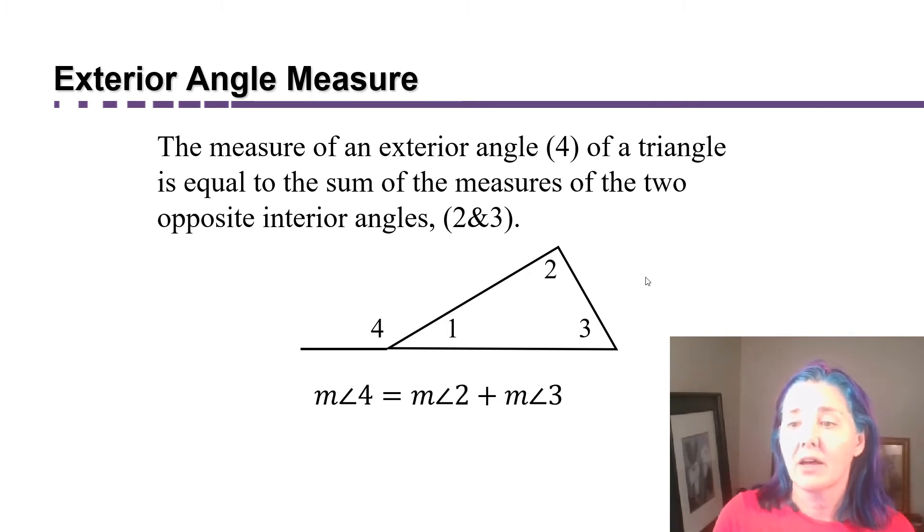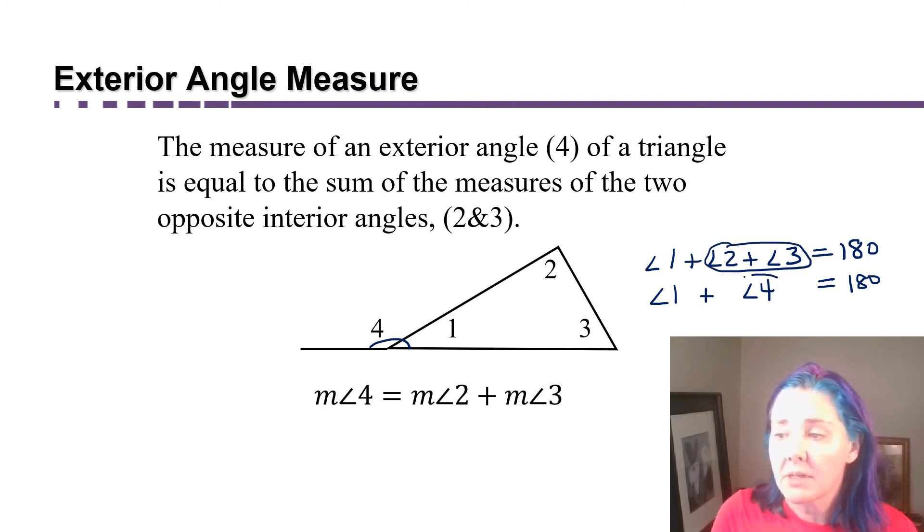The measure of angle 4 is equal to the measure of angle 2 plus the measure of angle 3. This is a direct result of the fact that the interior angles add up to 180. We also know that angles 1 and 4 are supplementary, they add up to 180 because they form a straight angle. It must be that angle 2 and 3 are contributing the same amount of degrees as angle 4. We memorize that the exterior angle is equal to the sum of the two opposite interior angles.